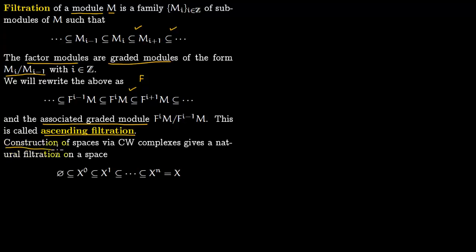The first most important example topologically is the construction of spaces via CW complexes. The way you construct CW complexes gives you a natural filtration. You start with zero cells, then take one cells and attach the boundary to zero cells.